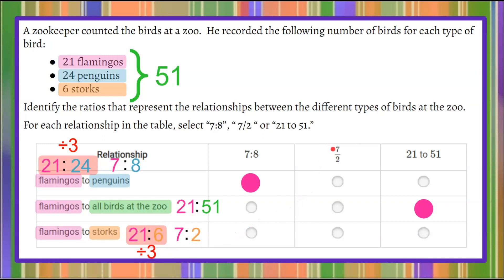So this ratio in simplest form is 7 to 2, which can be written with a fraction bar, 7 fraction bar 2. So that is our answer choice. So there you have the three ratios written as a relationship of these three types of birds at the zoo.